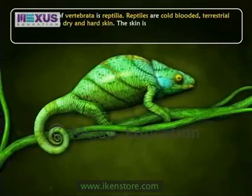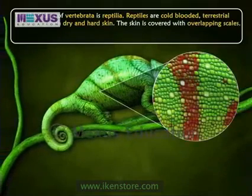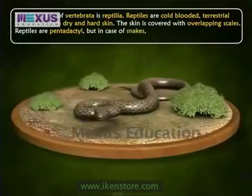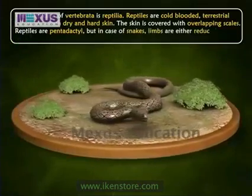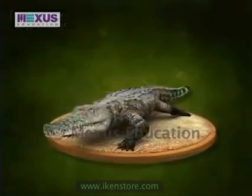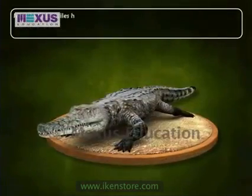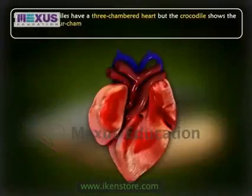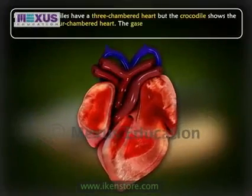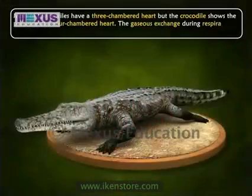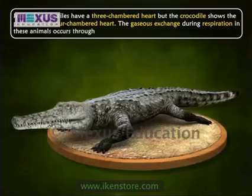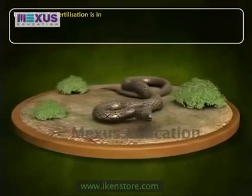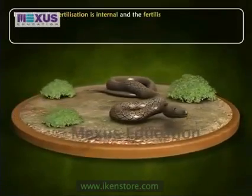The third class of Vertebrata is Reptilia. Reptiles are cold-blooded terrestrial vertebrates with dry and hard skin. The skin is covered with overlapping scales. Reptiles are pentadactyl, but in the case of snakes, limbs are either reduced or absent. Most reptiles have a three-chambered heart, but the crocodile has a four-chambered heart.